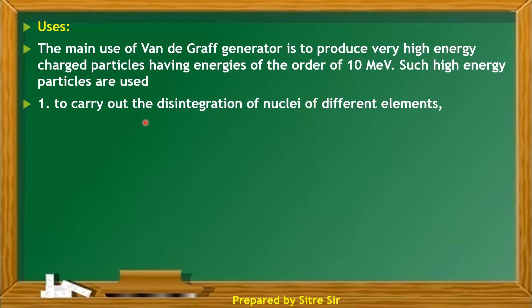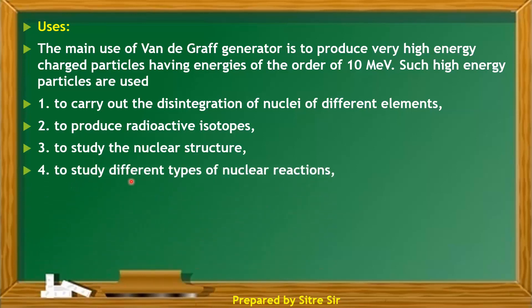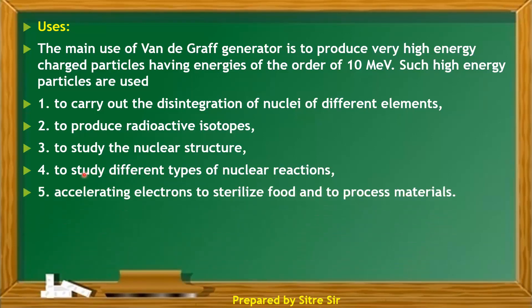The uses include: to carry out the disintegration of nuclei of different elements; to produce radioactive isotopes; to study the nuclear structure; to study different types of nuclear reactions; and to accelerate electrons to sterilize food and to process materials.